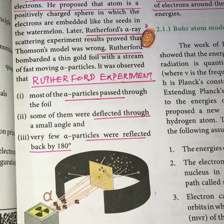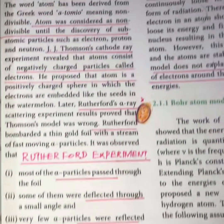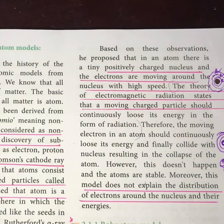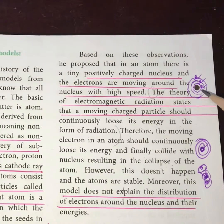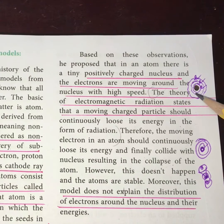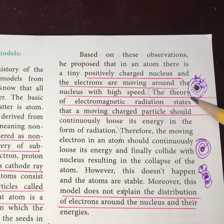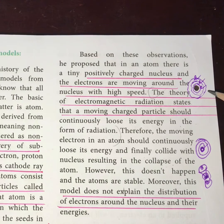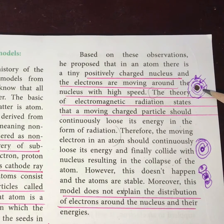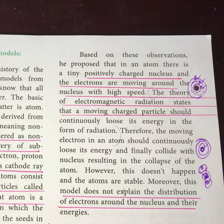From the alpha ray scattering studies, it was found that an atom consists of a positively charged sphere called a nucleus, where positively charged protons and neutral neutrons are present, around which the negatively charged electrons are circulated. The alpha particles are deflected by the positively charged proton region, while electrons and neutrons cause no reflection.